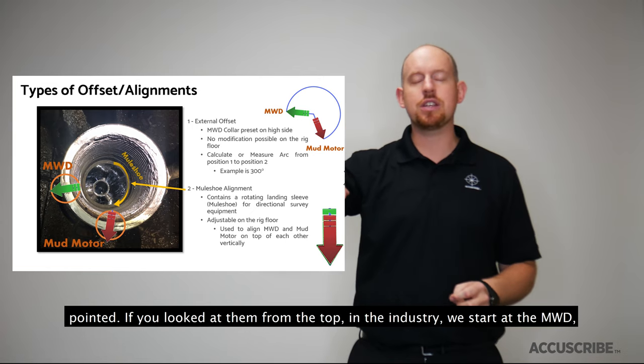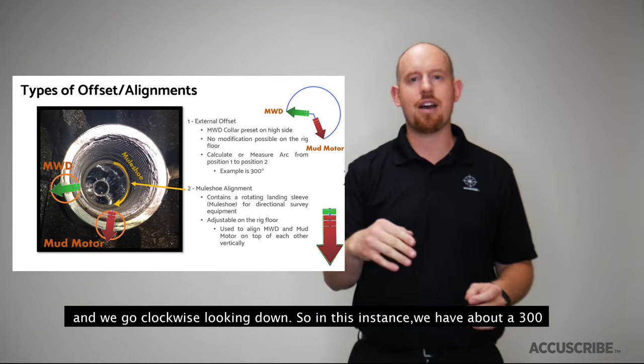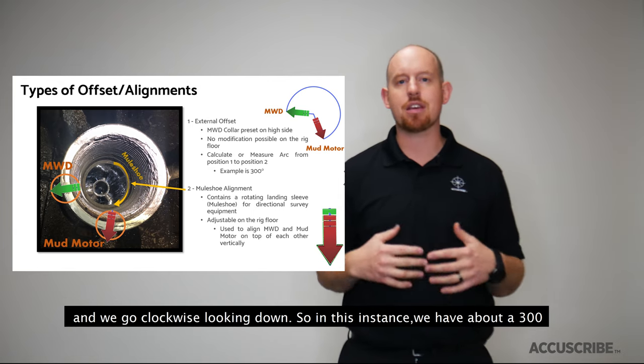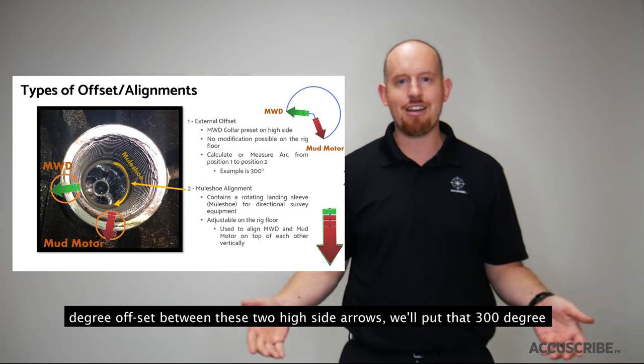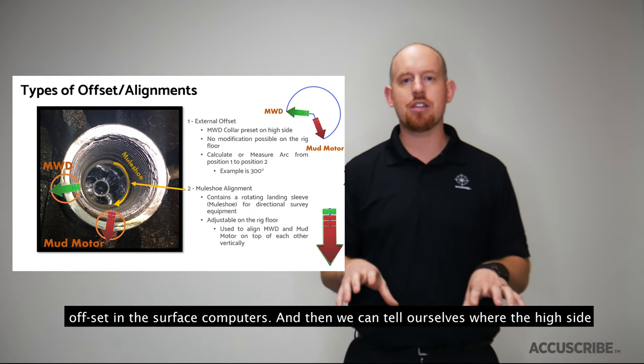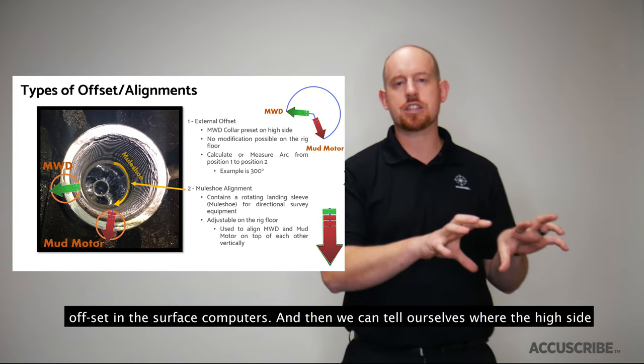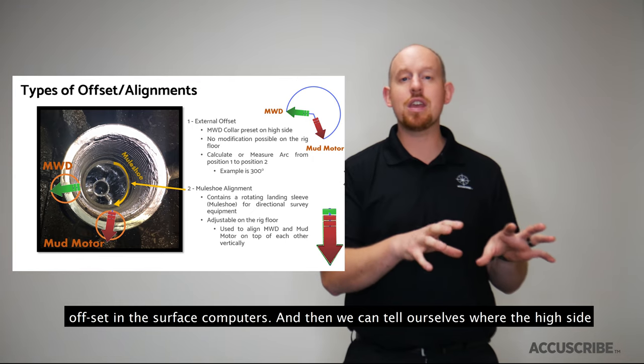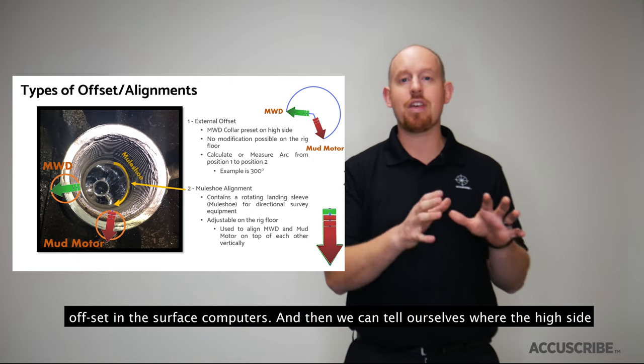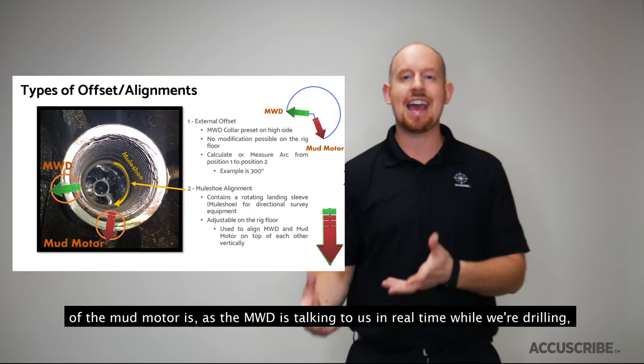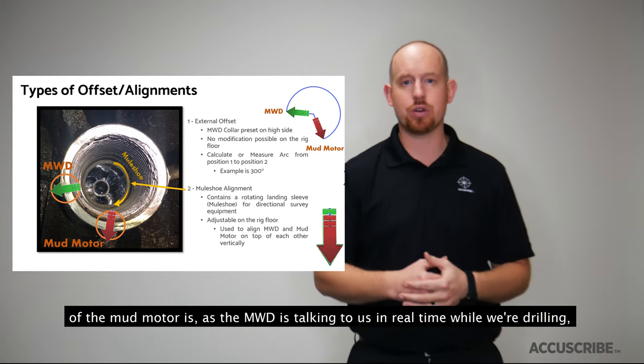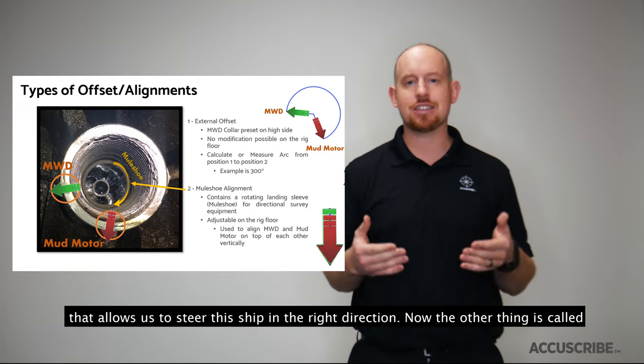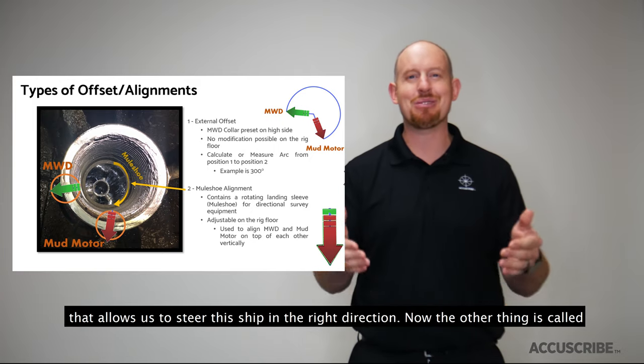In the industry we start at the MWD and we go clockwise looking down. So in this instance we have about a 300 degree offset between these two high side arrows. We'll put that 300 degree offset in the surface computers and then we can tell ourselves where the high side of the mud motor is as the MWD is talking to us in real time while we're drilling. That allows us to steer this ship in the right direction.